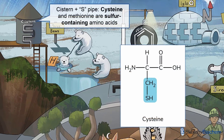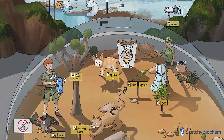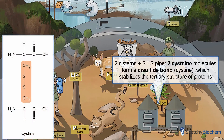Just like our pretty kitty methionine, cysteine also contains a sulfur atom in its side chain. Cysteine can form disulfide bonds with other cysteine molecules — forming cystine. This doubled-up molecule is pretty much nonpolar, hence why it's back in the desert. These cisterns have their very own S-pipes connected to each other over a bridge-looking platform — a perfect depiction of a disulfide bridge.